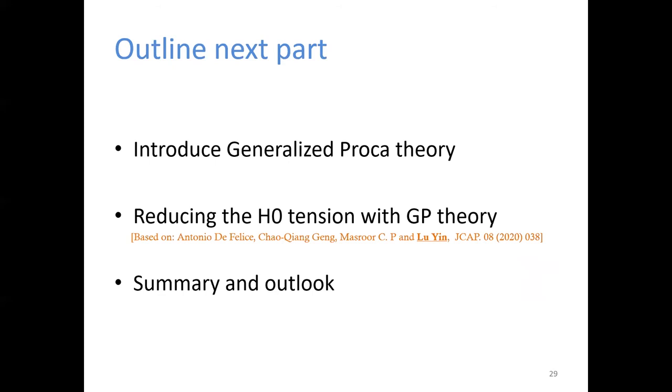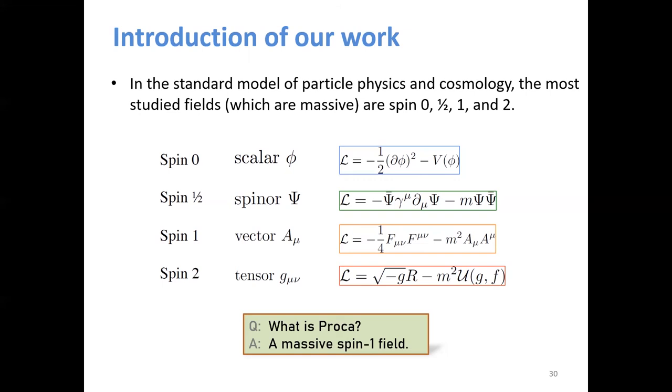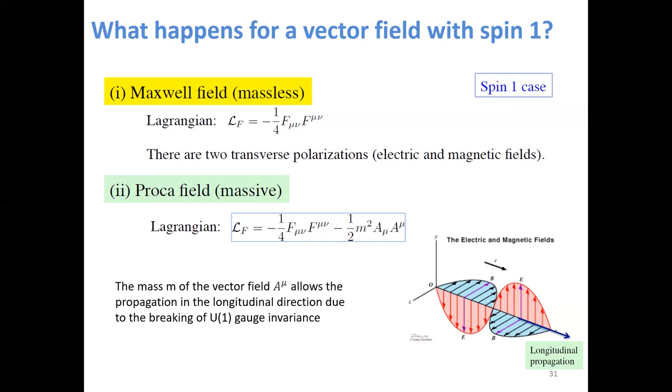In the standard model of particle physics and cosmology, the most studied fields are spin 0, 1/2, 1, and 2, corresponding to the scalar, spinor, vector, and tensor fields respectively. What is Proca? Proca is a massive spin 1 field. For the spin 1 case, there are Maxwell field and the Proca field. For the massless Maxwell field, there are only two transverse polarizations. And for the Proca field, there are not only two transverse polarizations but also a longitudinal propagation due to the breaking U1 gauge invariance.